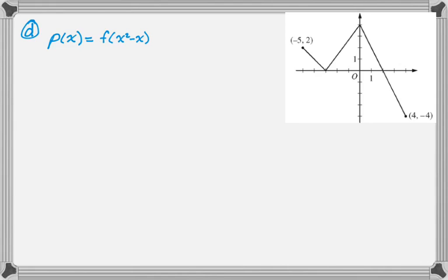So this one's going to test our knowledge of the chain rule. We need to find the slope of the line tangent to p at x equals negative 1. So I need p prime, which will be f prime of x squared minus x times the derivative of that. So 2x minus 1.